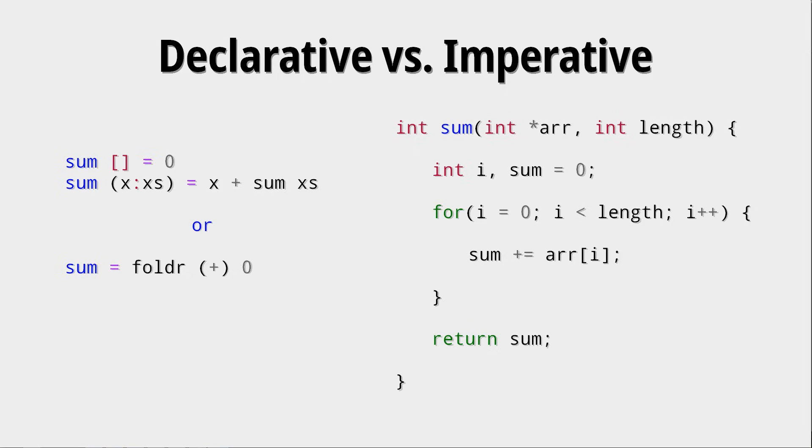Let's look at the difference between a declarative and an imperative approach when comparing them on a function that computes the sum of an array or list of numbers. In the imperative approach on the right, we can see that for each step that we do, we tell the program what to do. We say set the sum to zero, then set i to zero, then iterate until a certain condition is met.